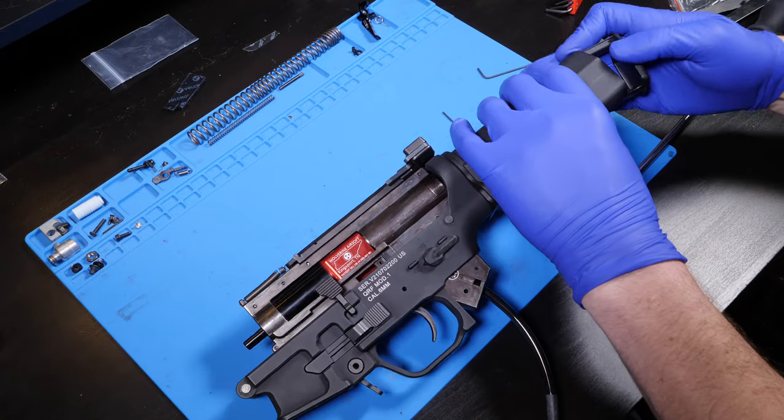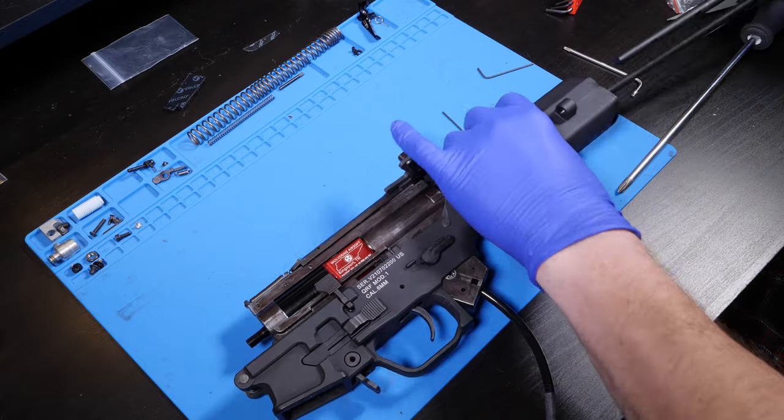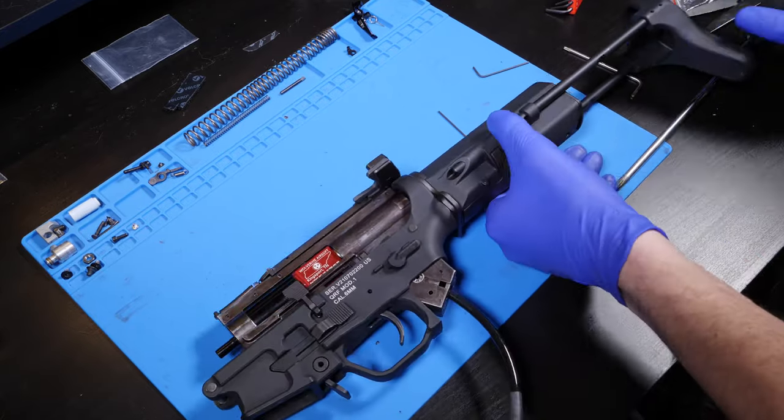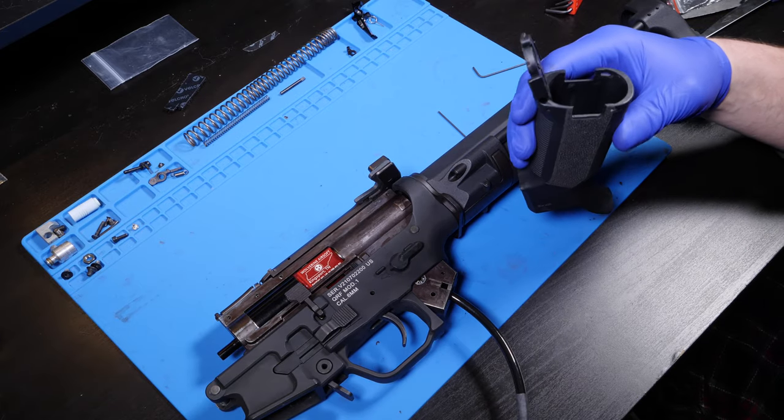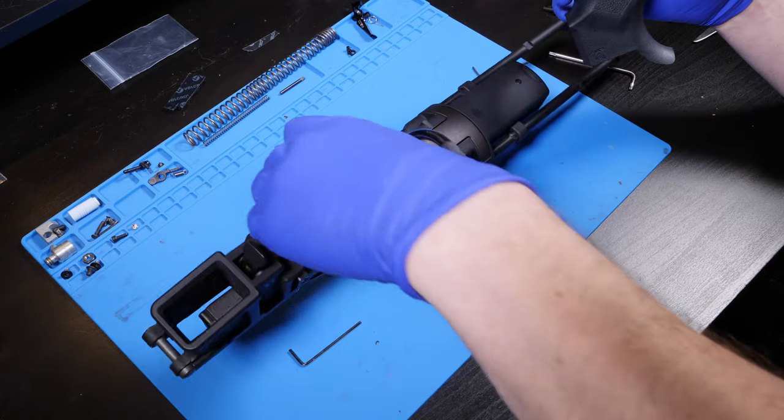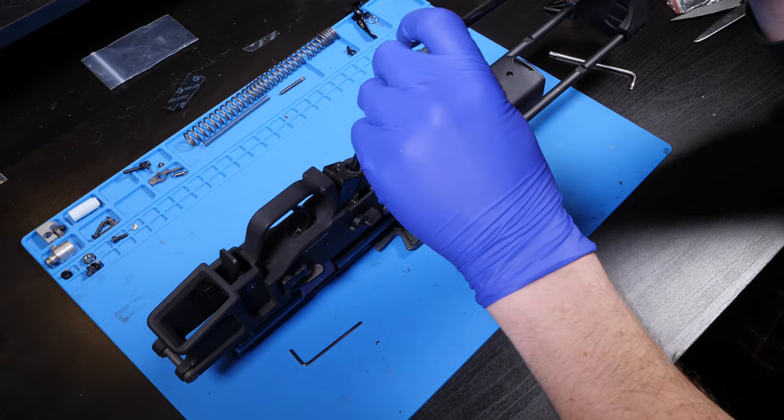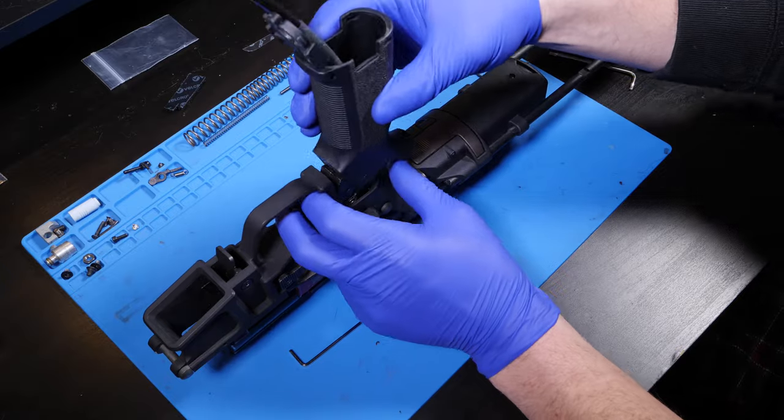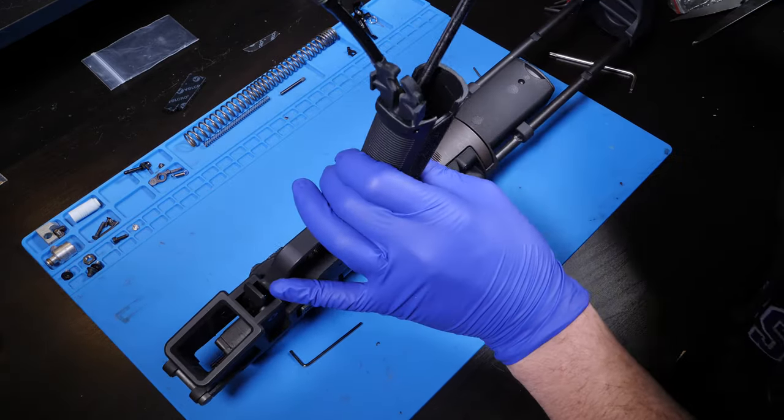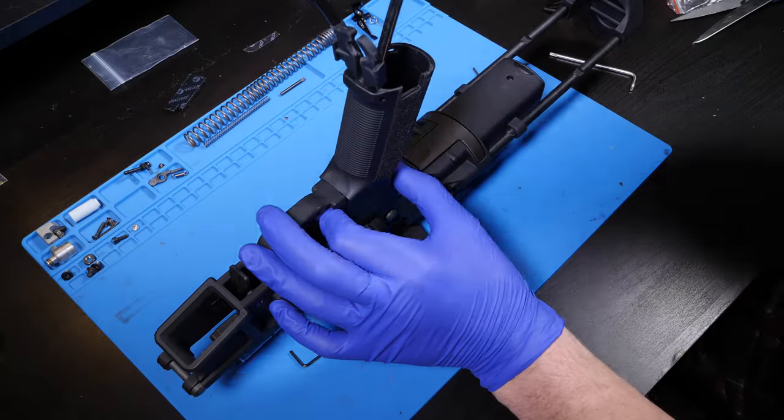I then popped the buffer tube cap back on and then slid in the retractable stock. I'm replacing the stock QRF grip with an Evike EMG Delta grip because I had it hand stippled and it has a door and an HPA hose hole located in the bottom without any modifications needed. Using the stock pistol grip screws, I then tighten it into place and feed the hose through the door and then snap the door shut.